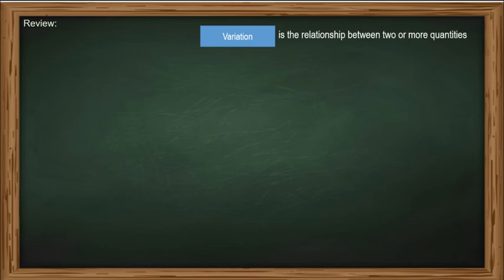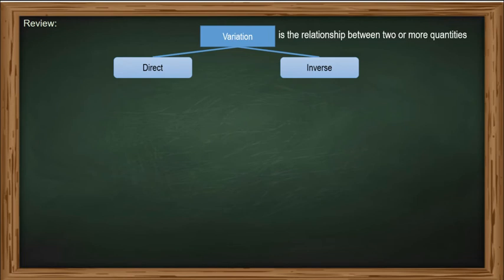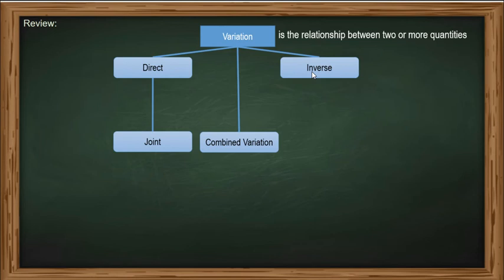Variation is the relationship between two or more quantities. Now, what are the four types of variation? The four types of variation are as follows: direct, inverse, joint, and combined.